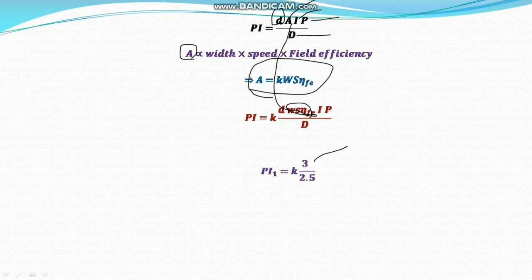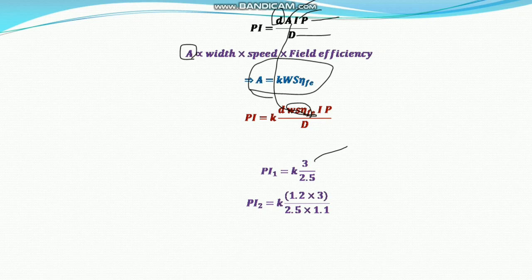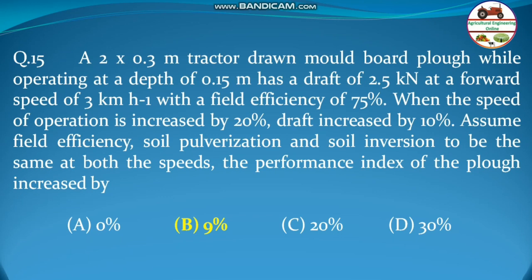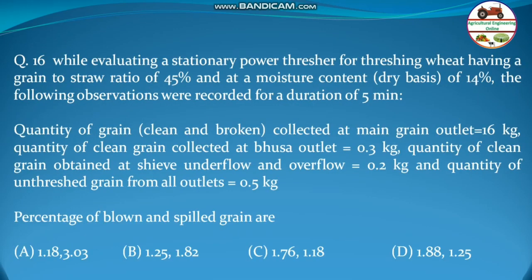Initially speed = 3 km/h and draft = 2.5 kN. After the change, speed = 1.2 × 3 = 3.6 km/h and draft = 1.1 × 2.5 kN. Change in PI = (PI₂ − PI₁)/PI₁ × 100 = (3.6/1.1 − 3/1) / (3/1) × 100 = 9.09%. Therefore the Performance Index increases by approximately 9 percent.